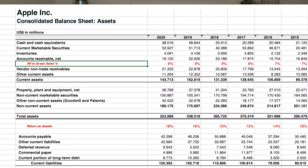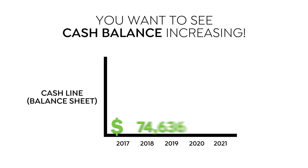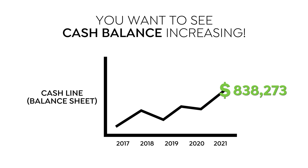First, we want to determine if the cash balance is going up over at least a period of five years. The cash line is the first balance on every single balance sheet. Is this number increasing over a period of at least five years? If yes, don't quite celebrate yet.